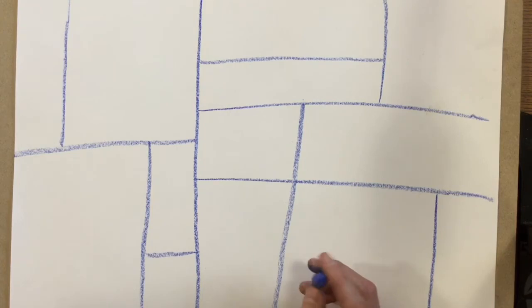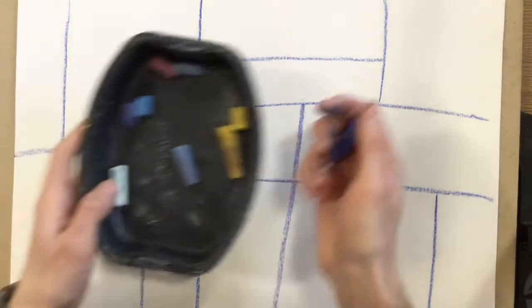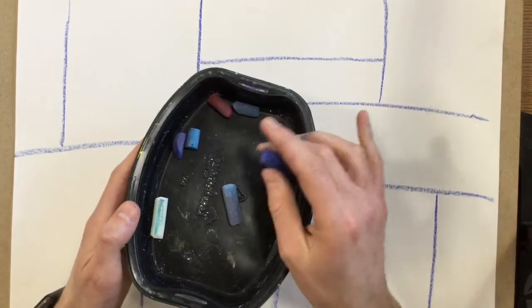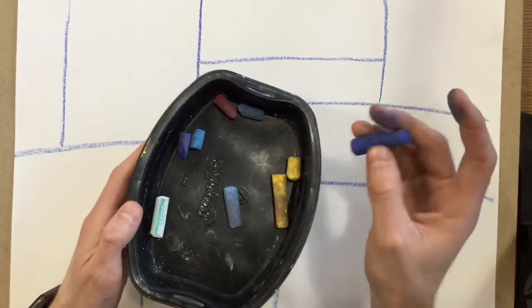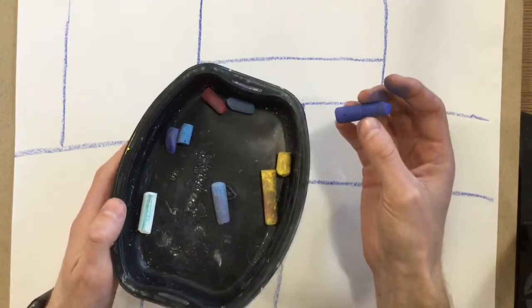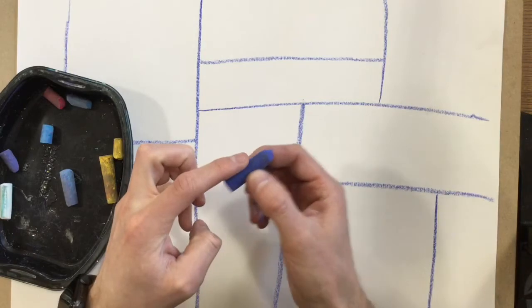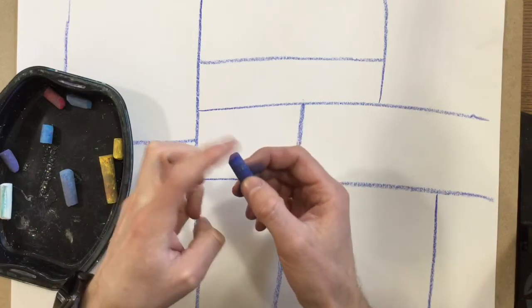So you are going to use the primary colors today. Notice I have red, I have a dark blue and a light blue, and I have some yellows. And when I go to color in these squares on my paper, I'm going to use the side of my chalk, not the tip.